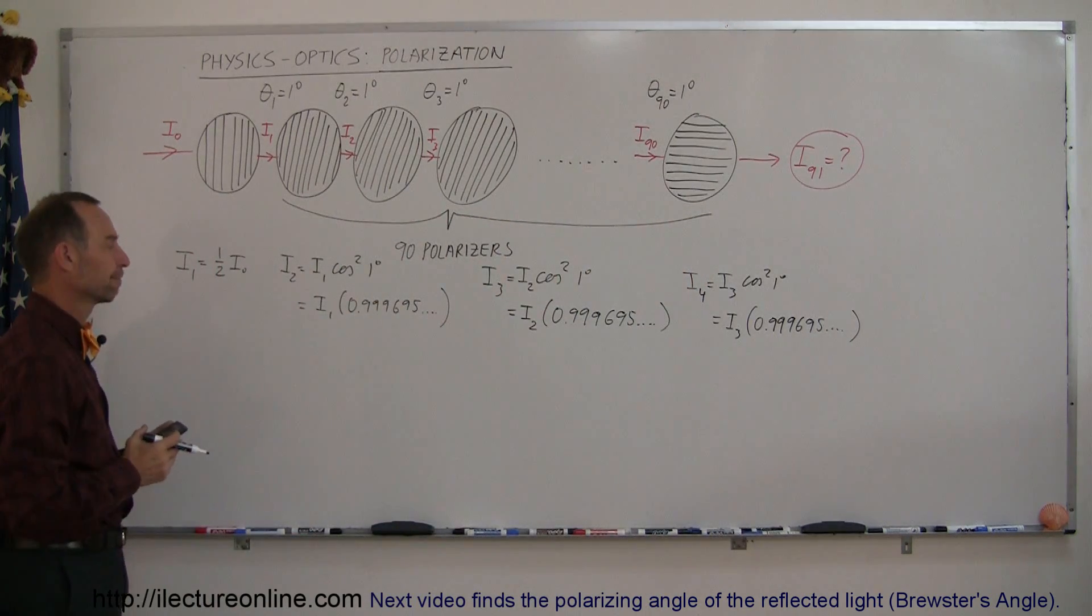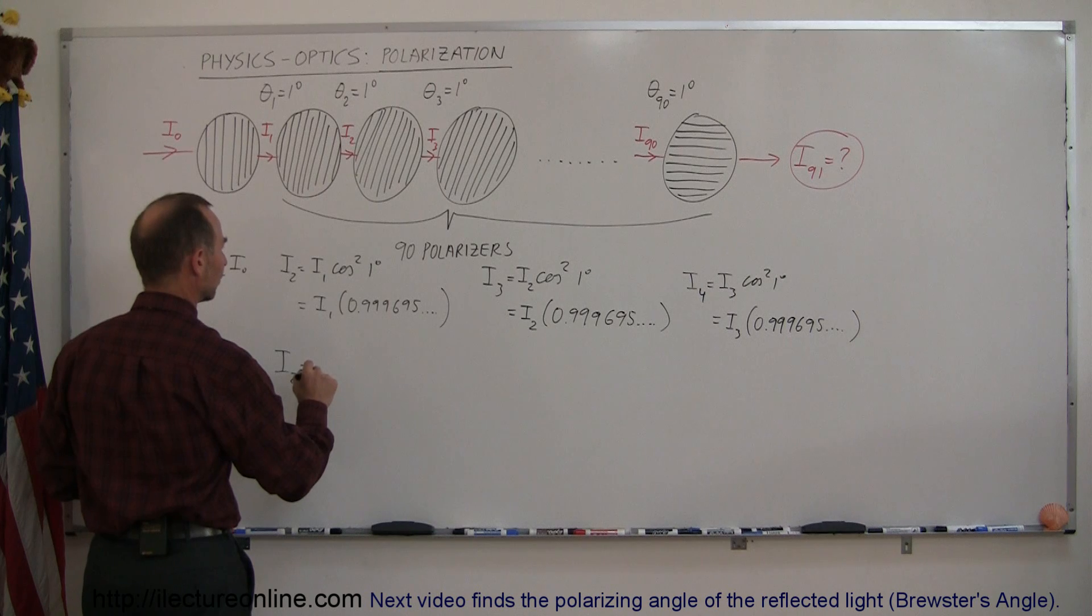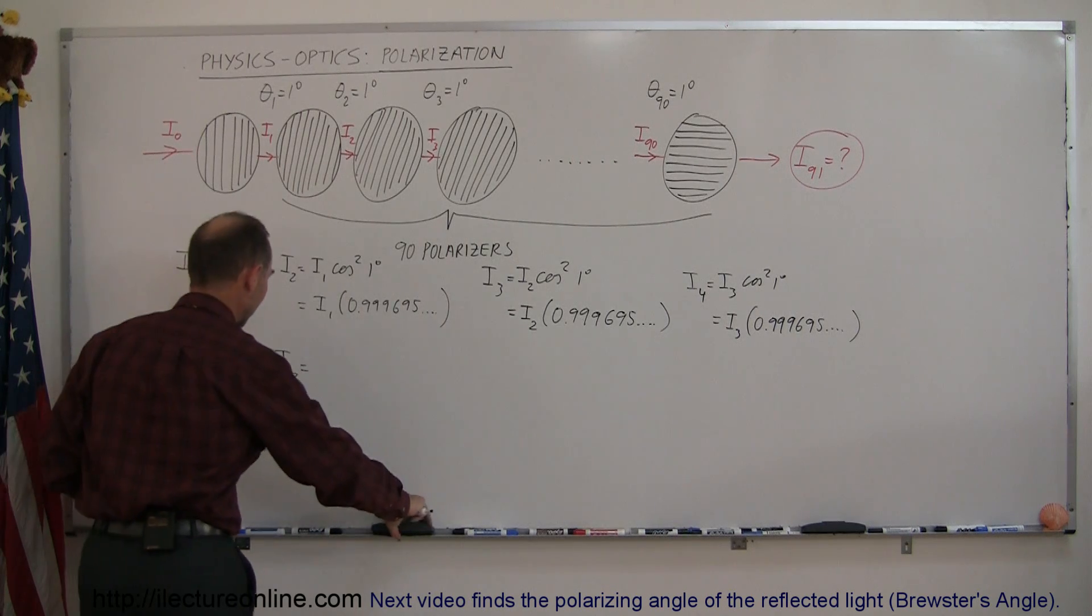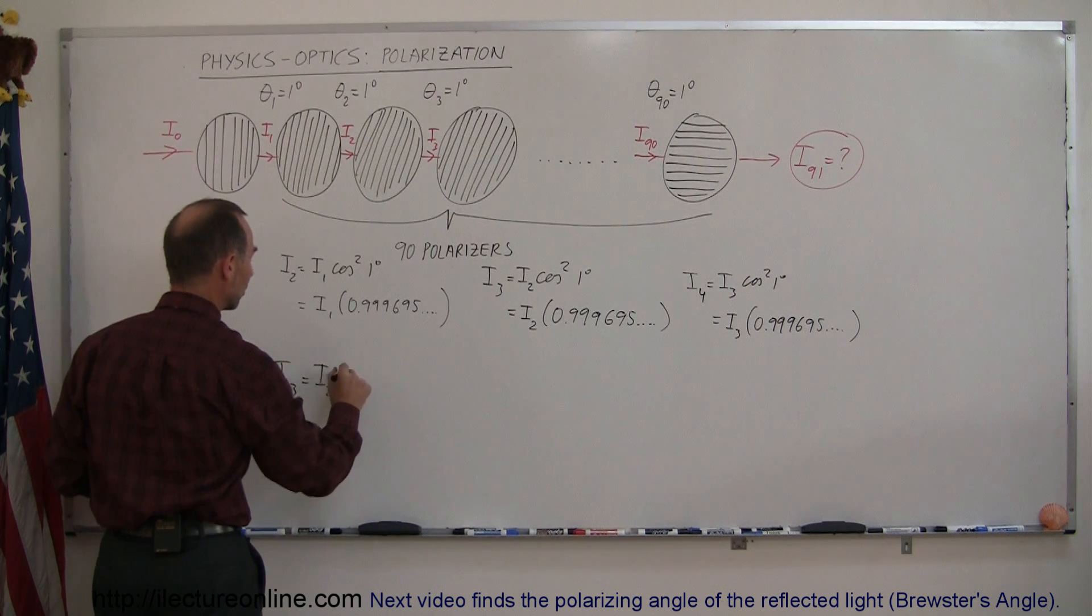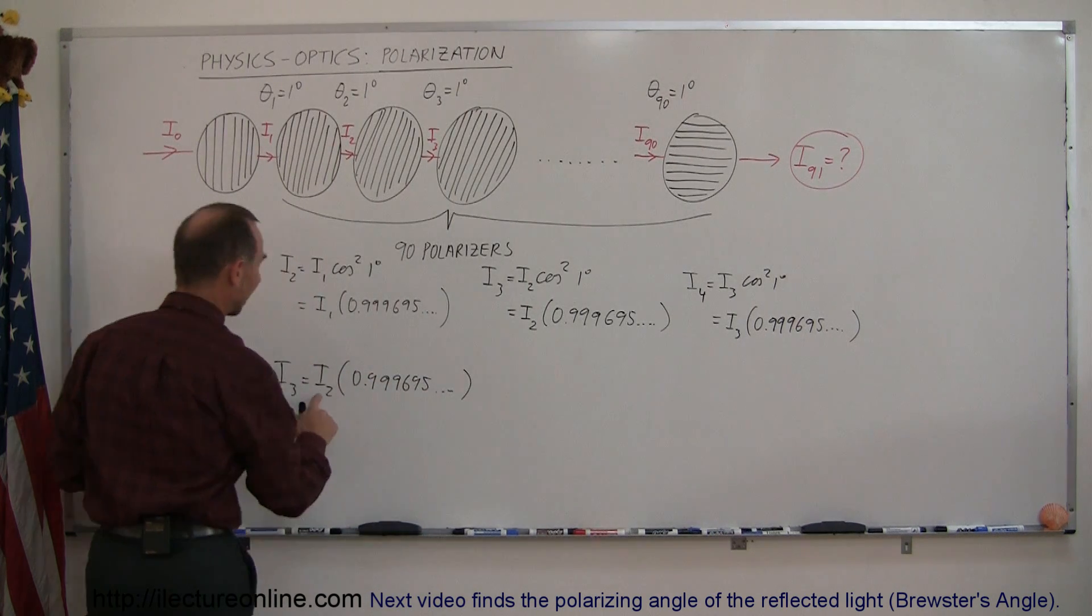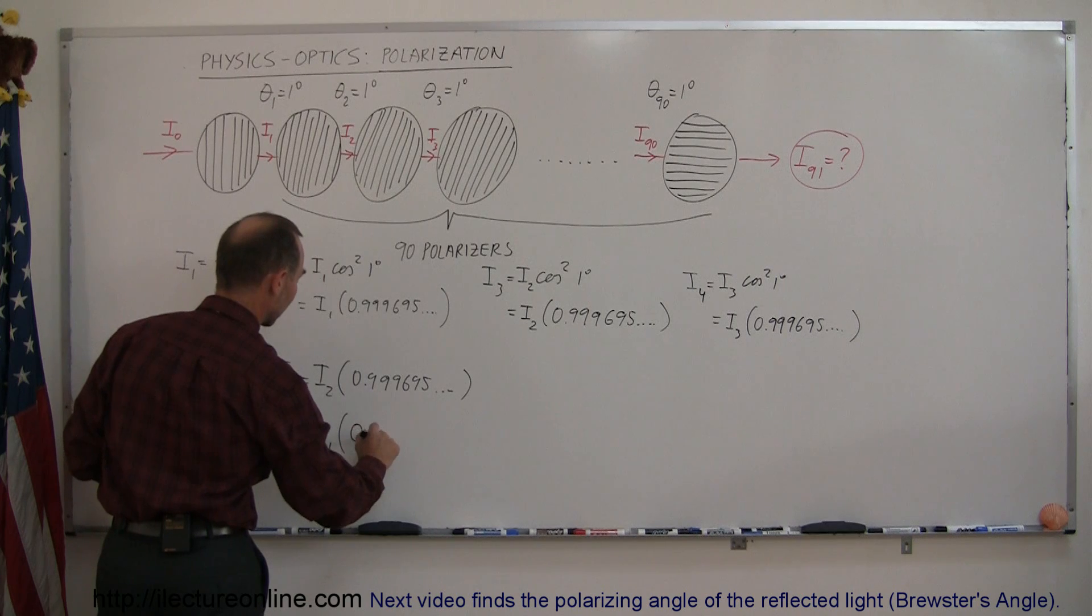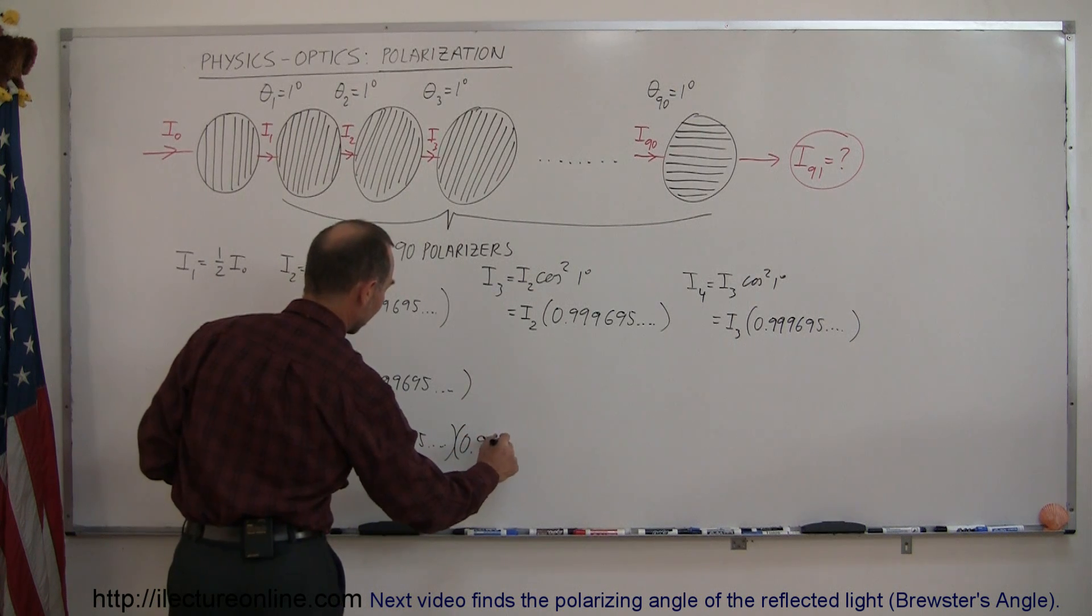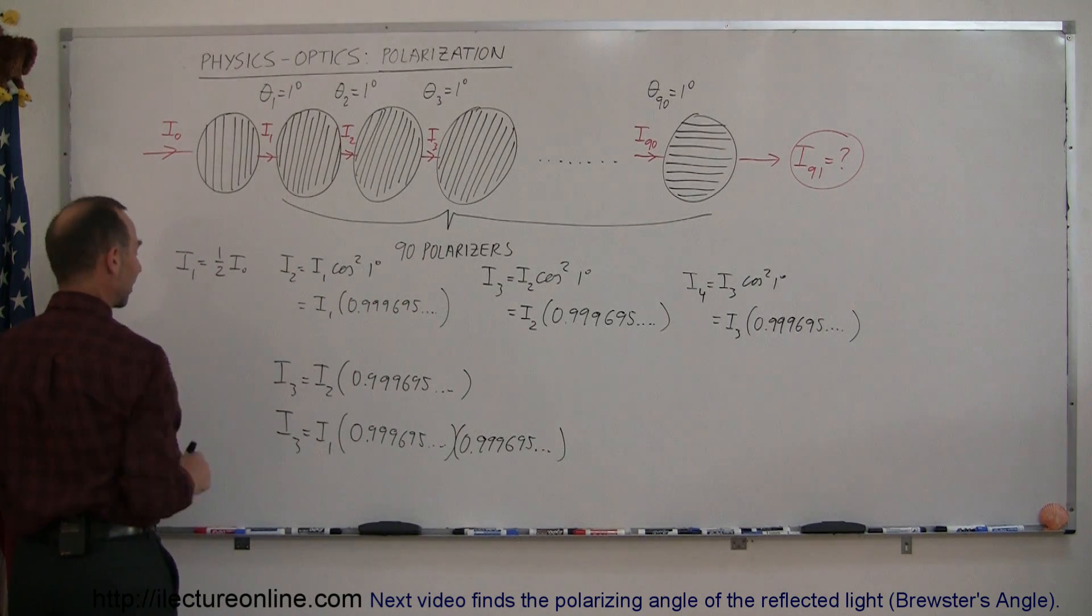Now how do we tie all that together? Since i sub 3 is equal to i sub 2 times 0.999695 and so forth, and i sub 2 in itself is equal to this, we can say that i sub 3 is equal to i sub 1 times 0.999695 times 0.999695 and so forth. And of course that i sub 1 is equal to 1 half i sub 0.